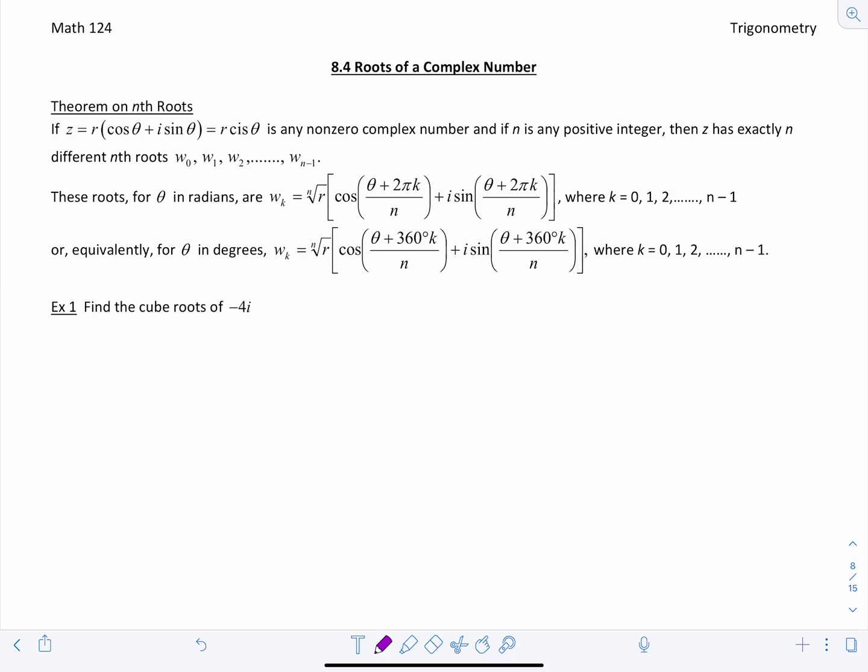So here's the theorem on nth roots. If you have z which is a complex number written in trig form and it's a non-zero complex number and n is any positive integer, then z has exactly n different roots and we number them w sub 0, w sub 1, all the way up to w sub n minus 1. So if you add it up that's n different roots total.